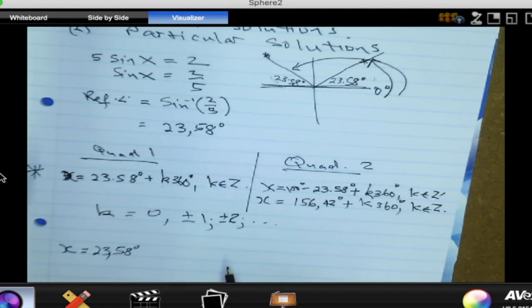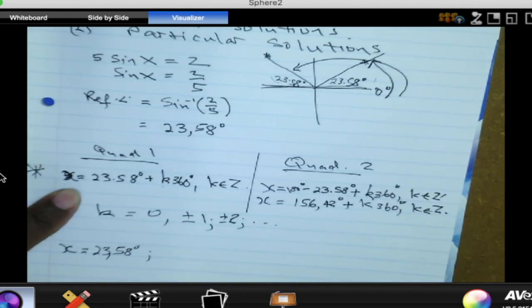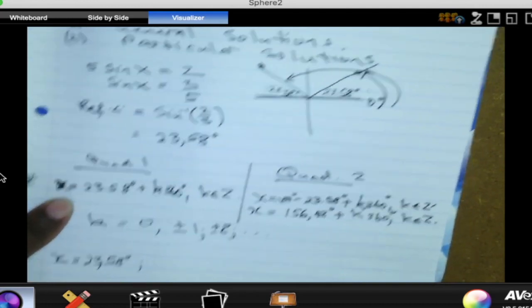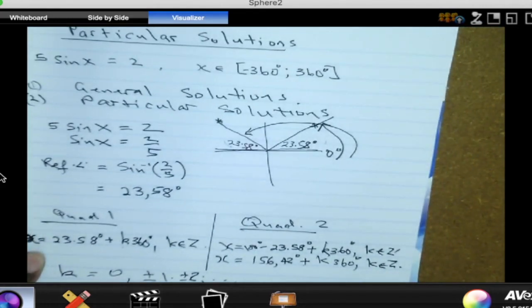Let's continue from quadrant 1. Now let's put K equal to 1. So you will get an answer clearly that is more than 360 now. But our interval says the answer should be from negative 360 to 360. So do I need to put K equal to 1? No. I don't need to because I'll get an answer bigger than 360, and that answer is outside our interval.